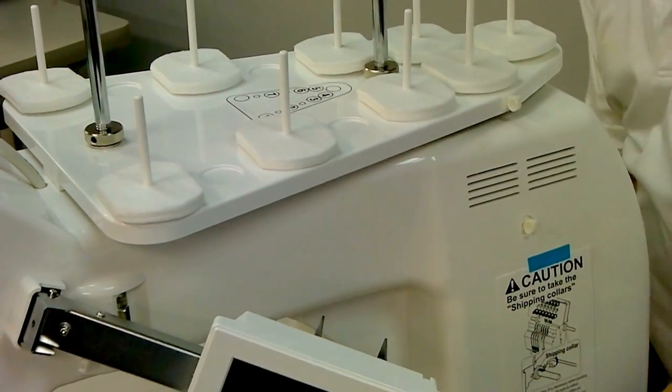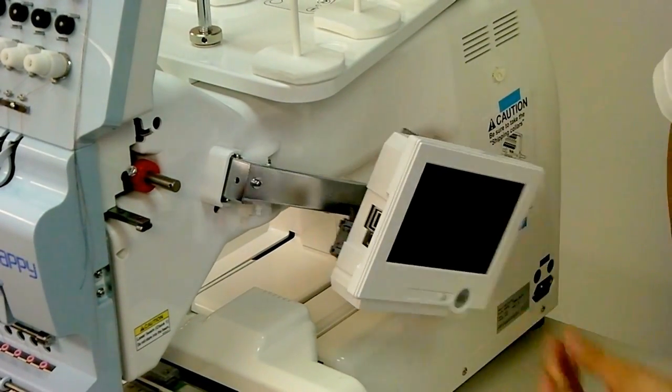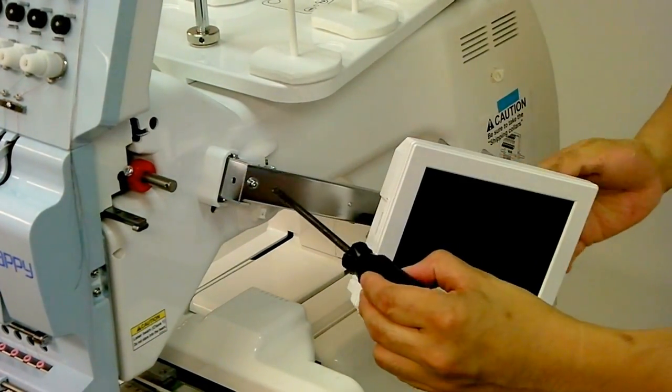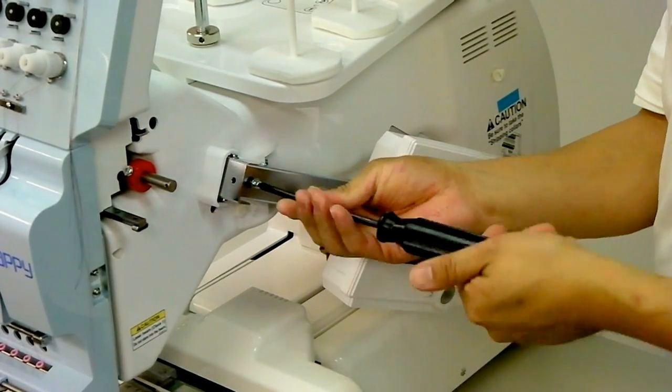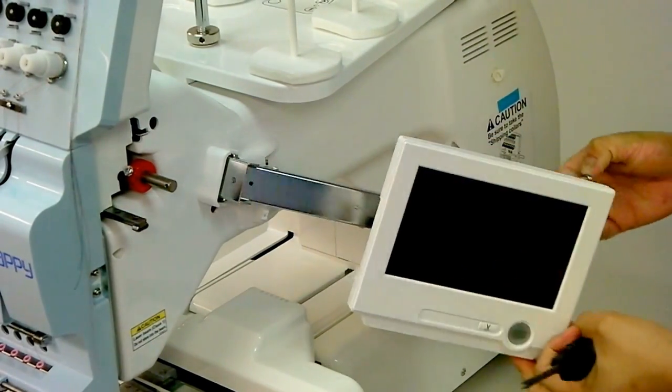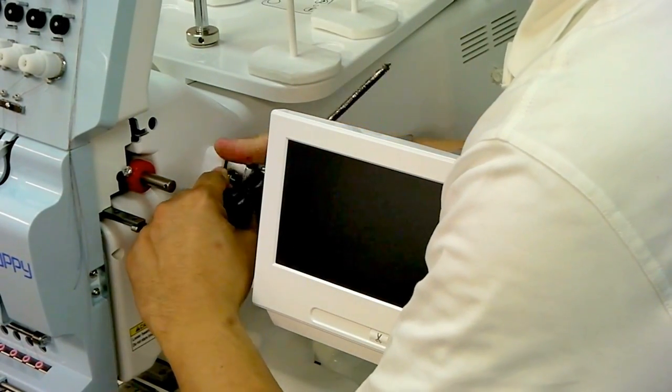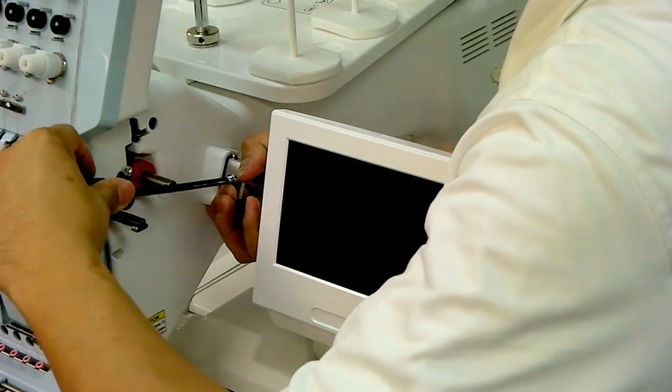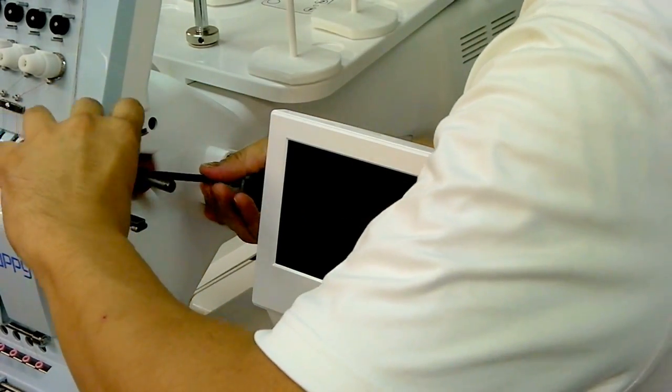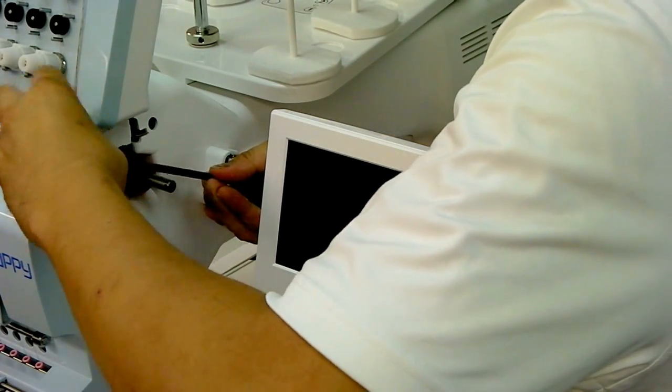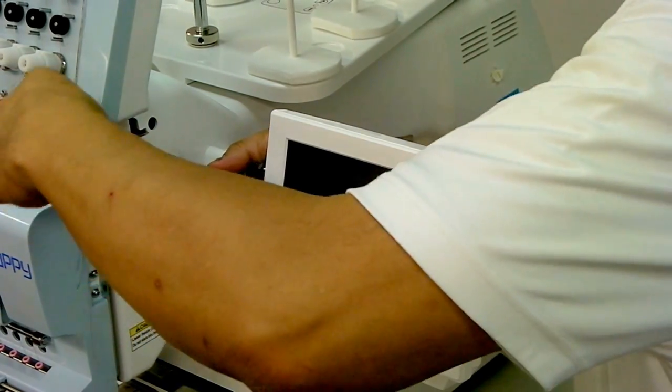Now the first thing we want to do is swing the control panel up into the locked position. But before we do, there's a small Phillips screw here that we want to remove temporarily. Swing the control panel up, and finally replace the Phillips screw, but this time over the sleeve that it stops up against. That should hold the control panel up, the control panel arm.